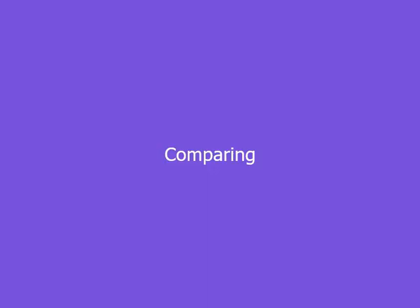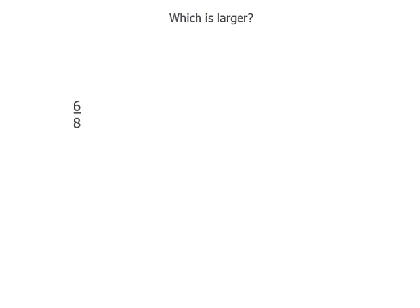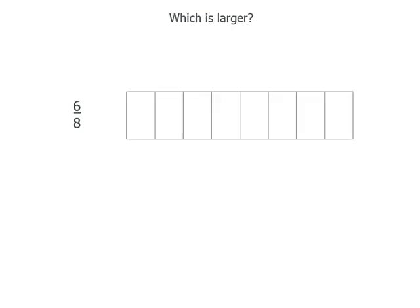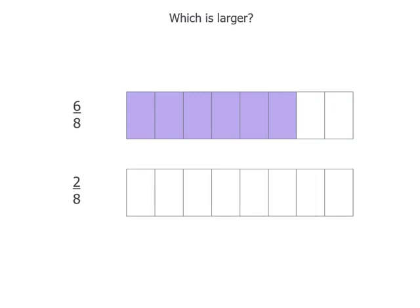So when we compare fractions, that really helps us. If we want to think about which is larger — 6 eighths — there's our whole divided into 8 equal pieces, and if we shade 6 of them, that's what 6 eighths looks like. Now we need the exact same size whole for the next one. Comparing 6 eighths to 2 eighths, we shade 2 parts, and you can see that 6 eighths takes up a lot more space than 2 eighths.